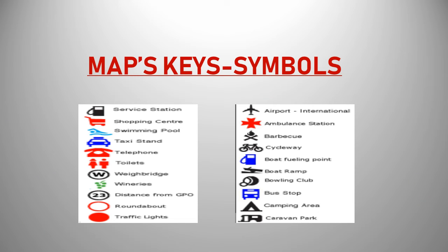Maps, keys, aur symbols. Is picture mein aapko bahut sari different keys nazar aa rahi hain, jo aapko different types of maps mein dikhai de sakti hain, like shopping center, taxi stand, swimming pool, airport, ambulance station. Isi tarah or jagah ki saari signs show ki gai hain. Different types of maps mein, like country map mein, aapko different keys given hongi, isi tarah land map mein different keys hongi, agar aapke paas resources map hai usmein different keys aapko show ki gai hongi. But agar aapko yeh pata hai ke in keys ko kis tarah follow karte hain map ko read karne ke liye, to aapko kisi bhi tarah ka map diya ho, you can easily read it because of the keys.